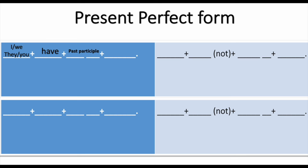For 'I', 'we', 'they', 'you' — use 'have' (which is fixed) plus the past participle or third form of the verb. If you don't remember the past participle of some verbs, please Google them. For the negative form: 'I / we / they / you' plus 'haven't' or 'have never', then the past participle and the rest of the sentence.